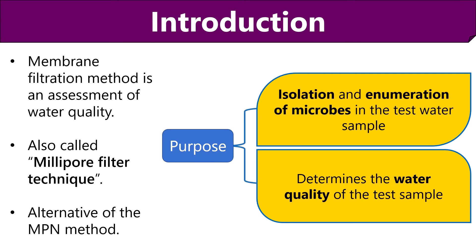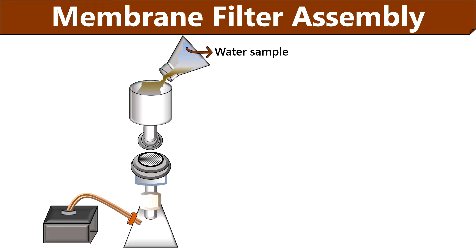This method has two basic approaches. First, it helps in isolation and enumeration of microbes in the desired volume of water sample by using a colony counter. Second, using this method, we can determine water quality by calculating the colony forming units over the culture plate. Therefore, the membrane filtration method inspects both the water quality and quantity of microorganisms in the water. Now we will study the different components of the membrane filtration assembly.